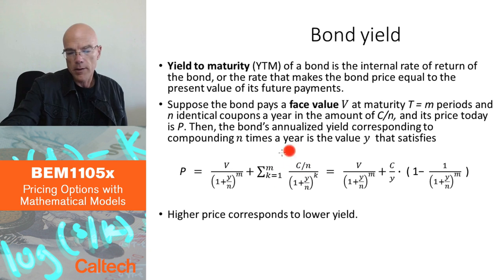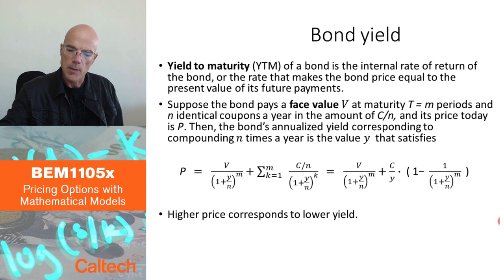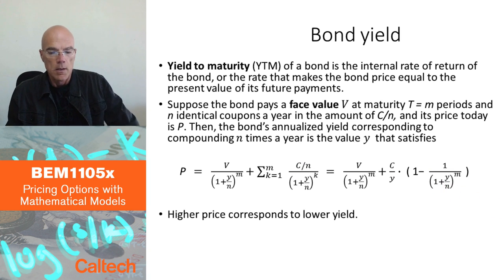It's a nonlinear equation. Y has to be solved in principle numerically. It simplifies here because this is a geometric series where all the payments are the same. Every coupon has the same amount, so you can simplify a little bit. But still you have to compute Y from here.